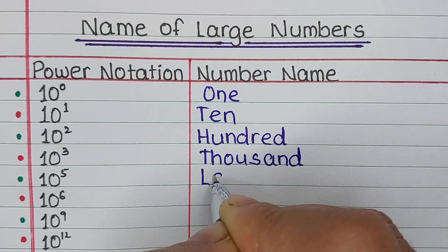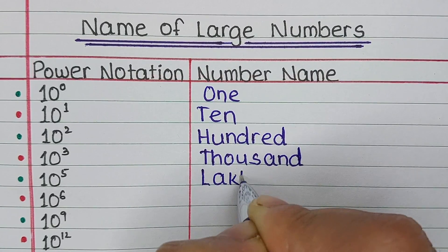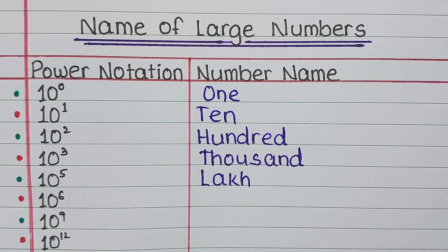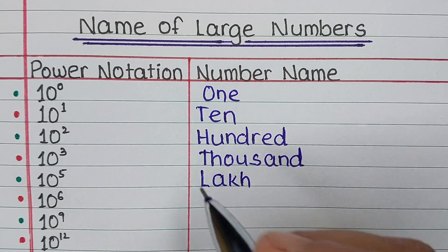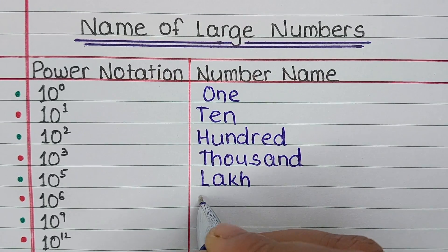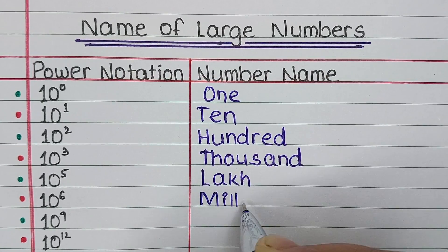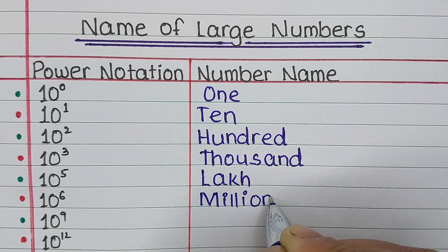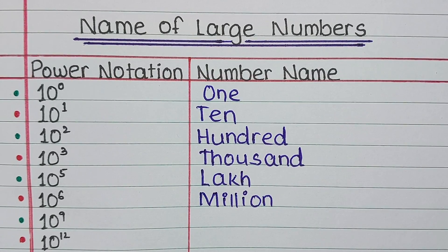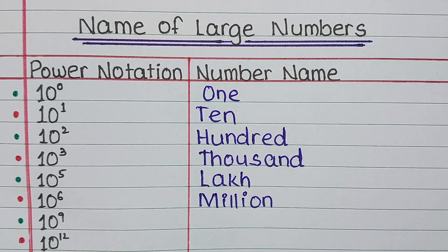Next is 10 to the power 5. We call it Lakh. Next is 10 to the power 6. The name is Million.